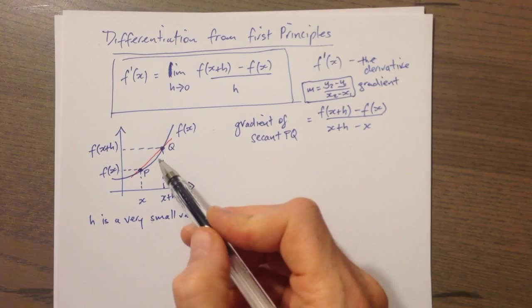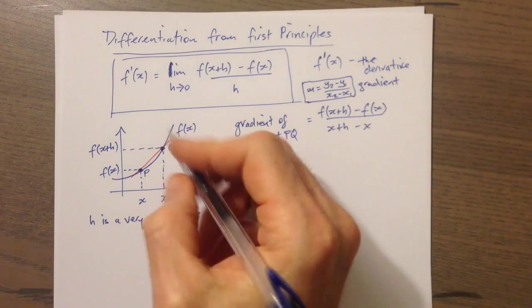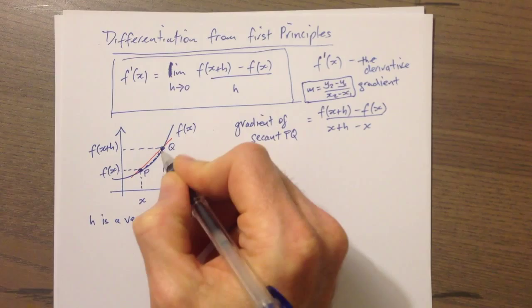Now let's consider the scenario where Q is approaching P — in other words, we want to think about moving along this curve from Q towards P.